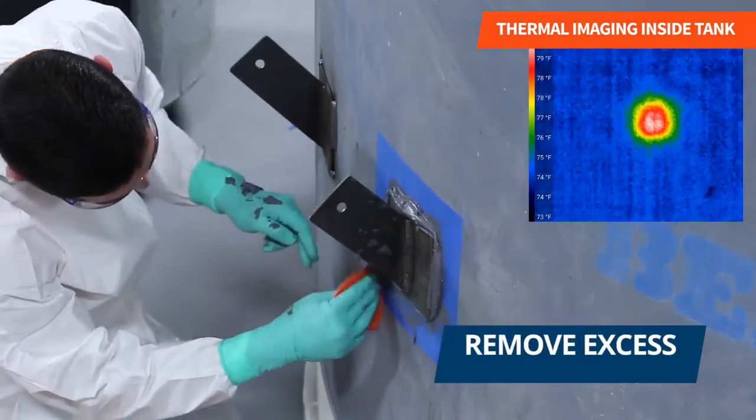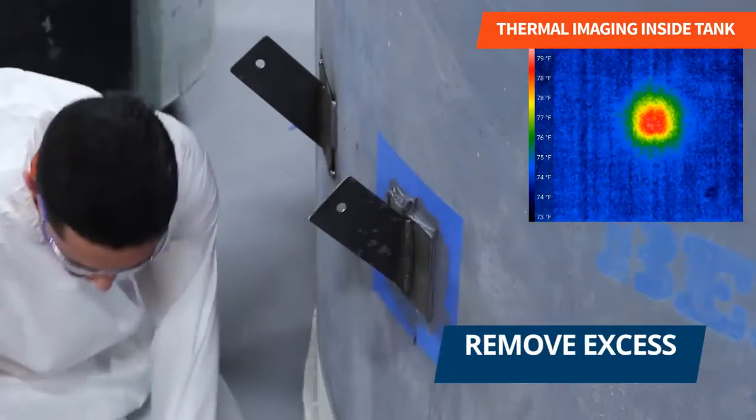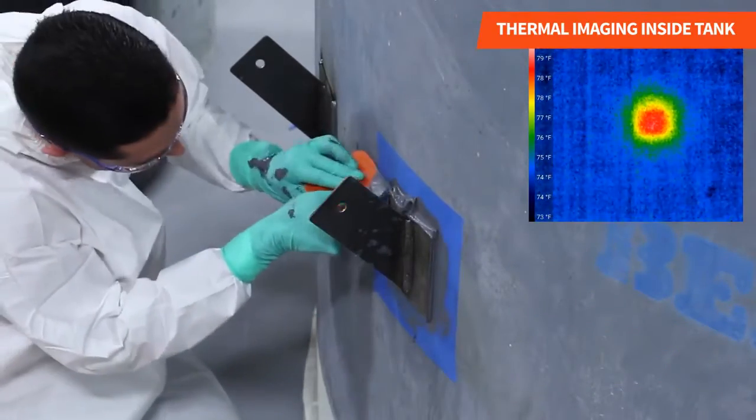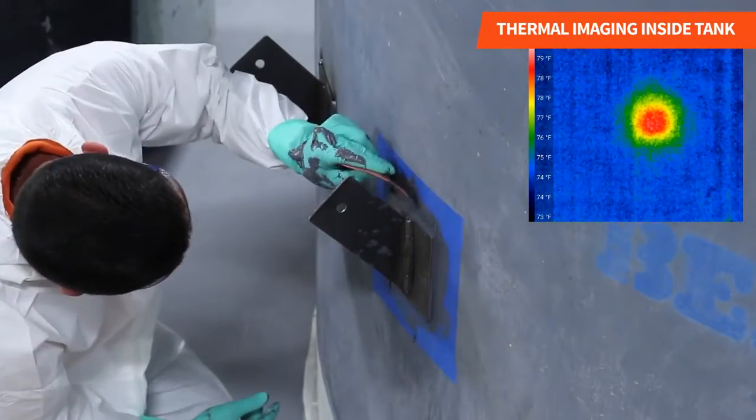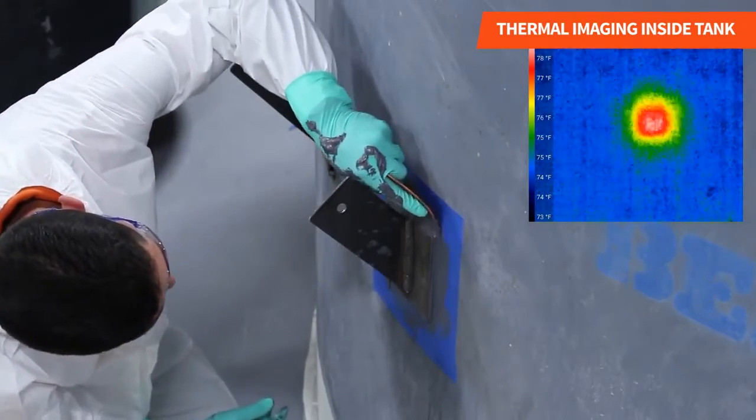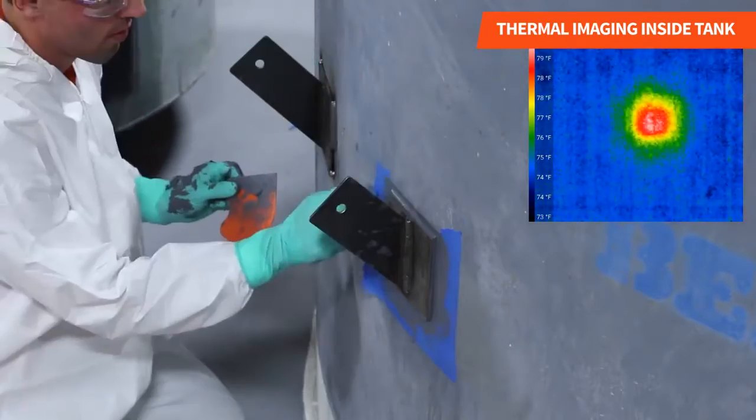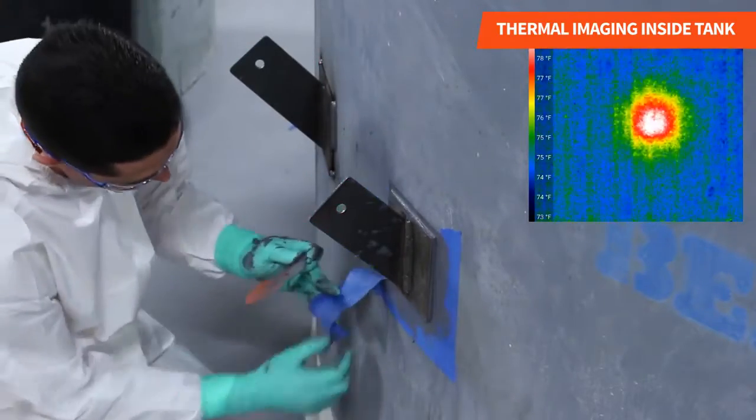We cleaned the excess product off the edges of the bracket. We took temperature readings via thermal imaging as you can see in this video. A maximum of 80 degrees Fahrenheit was reached, which is safe for both the tank lining and content. We removed the masking tape to finish the application.